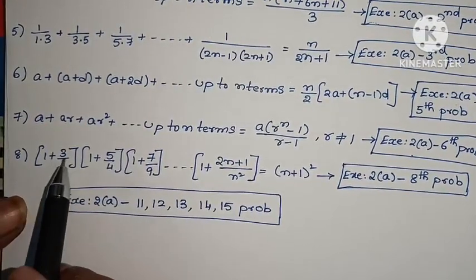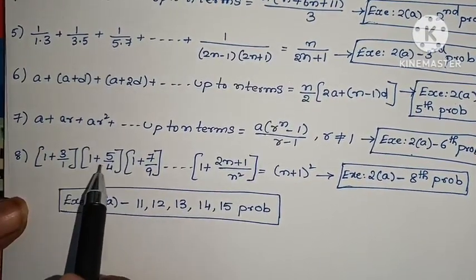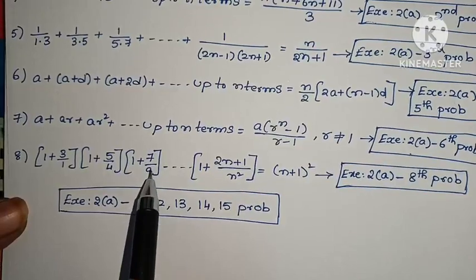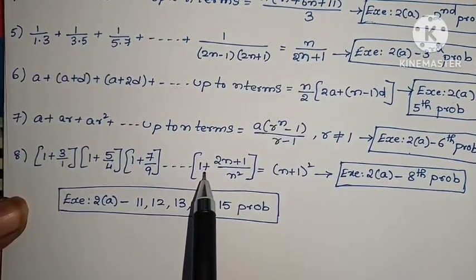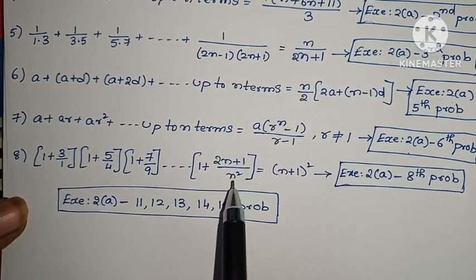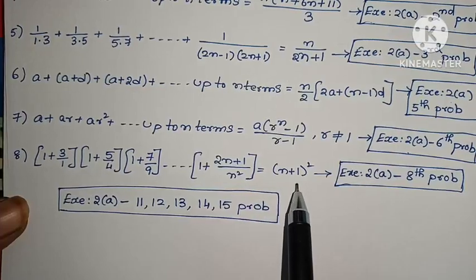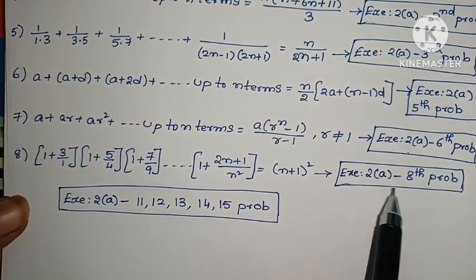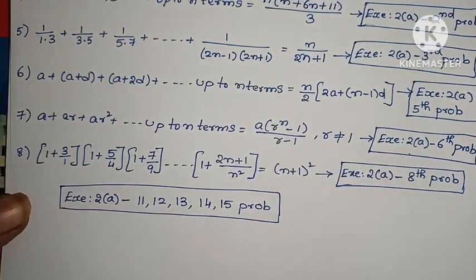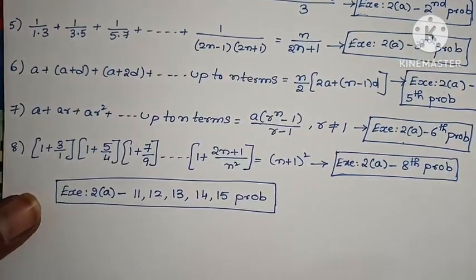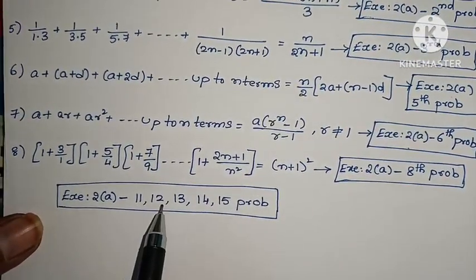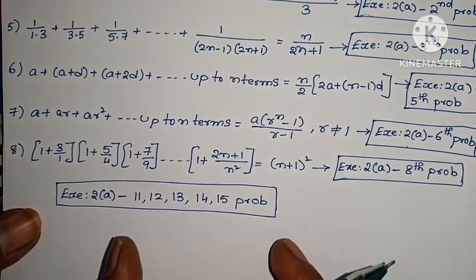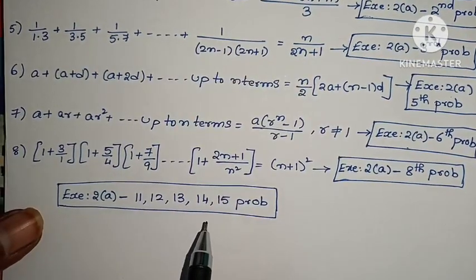Eighth problem: (1 plus 3 by 1) into (1 plus 5 by 4) into (1 plus 7 by 9) and so on into (1 plus (2n plus 1) by n squared) equals (n plus 1) whole squared. Additionally, problems 11, 12, 13, 14, and 15 are very important and have appeared in many previous exam questions.